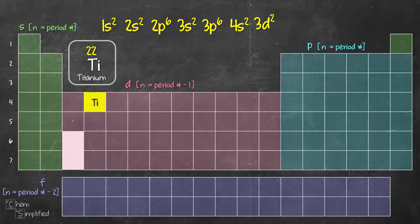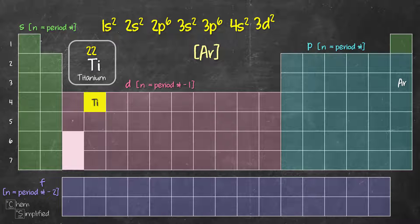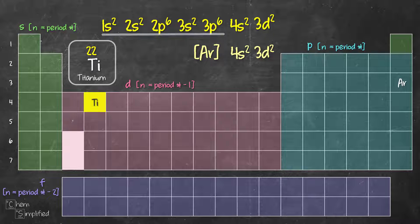For the abbreviated electron configuration, titanium is in period 4, so the noble gas in period 3 is argon. Write Ar in square brackets — [Ar] covers everything up to 3p6. What's remaining is 4s2 and 3d2. That's the abbreviated electron configuration for titanium.